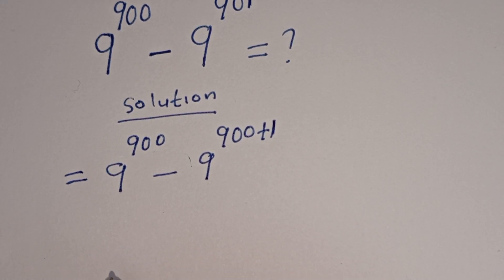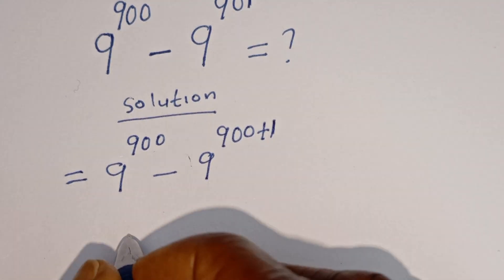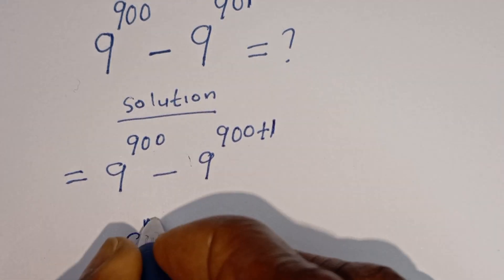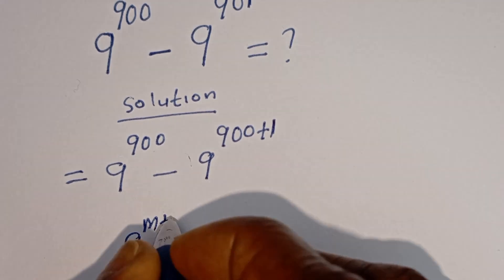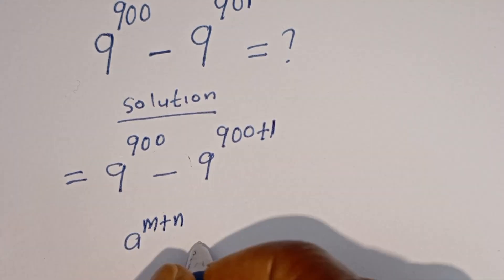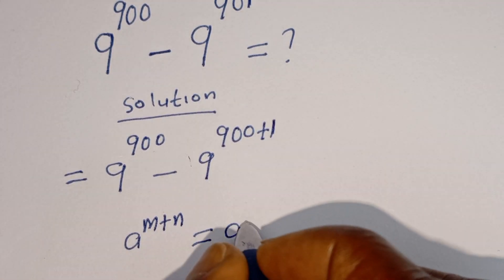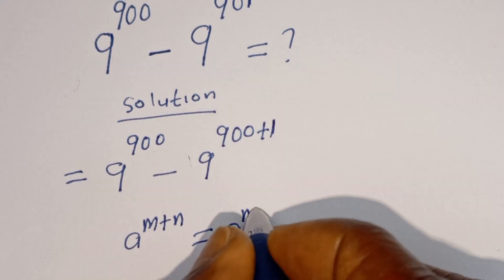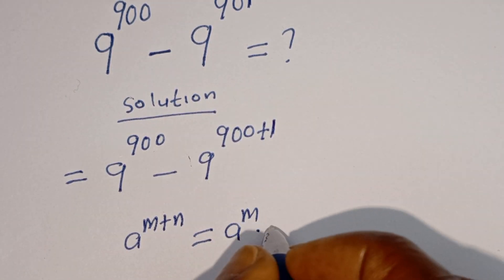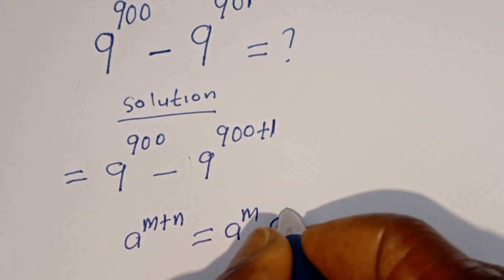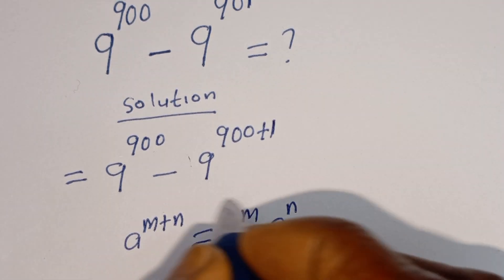Take note of this: if you have a to the power of m plus n, this is equal to a to the power of m multiplied by a to the power of n.